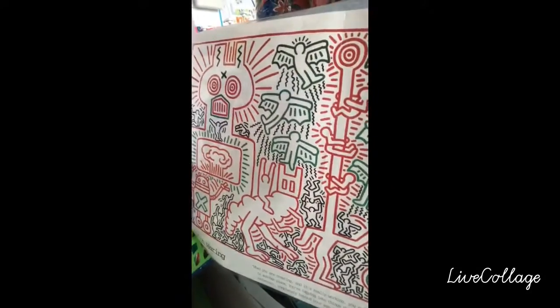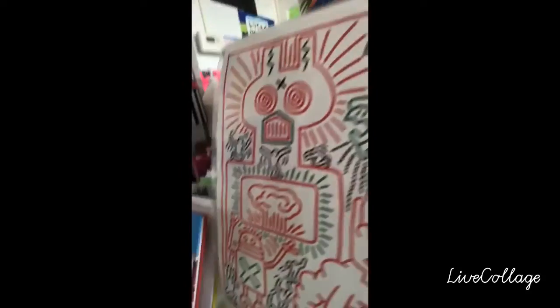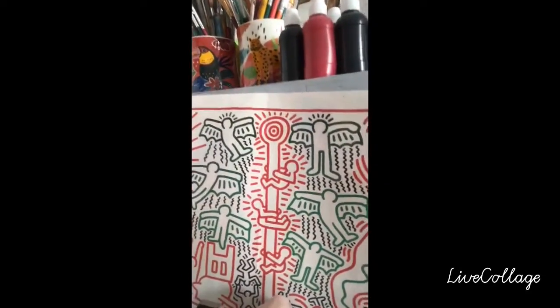First off, here's Keith Herring art. He did a lot of art with these simple kind of stick figure drawings and they are all doing something, which you can tell by those little lines. Do you know what that means? They're moving. It suggests movement.